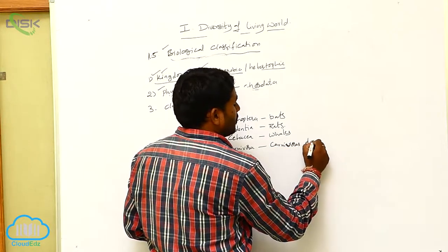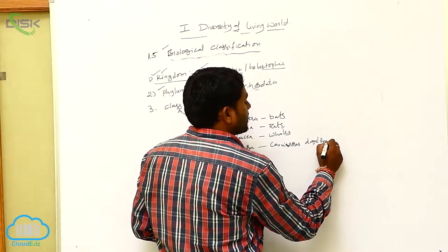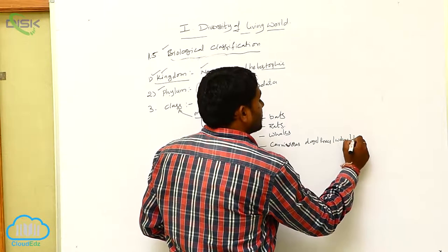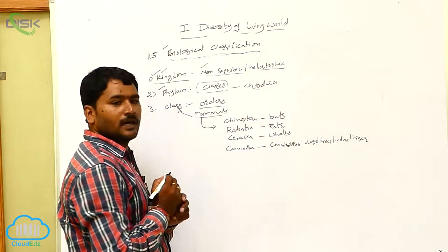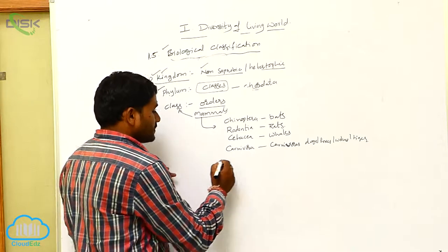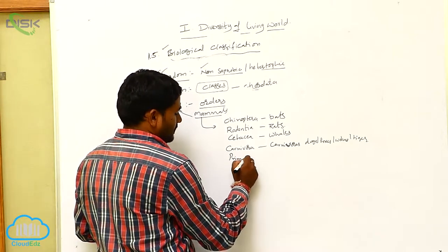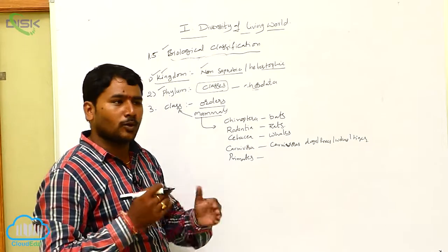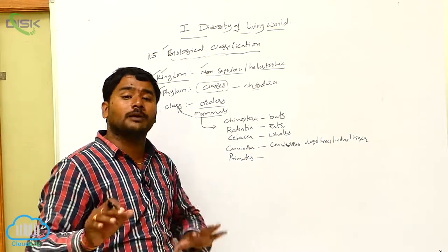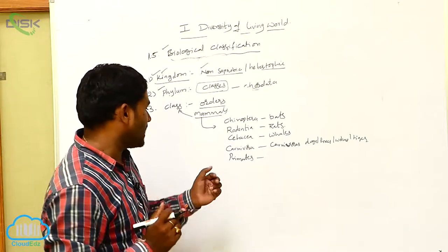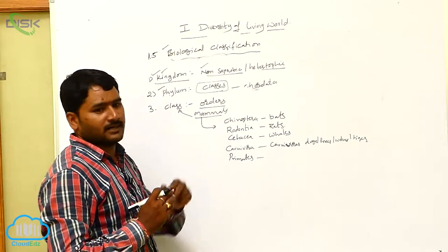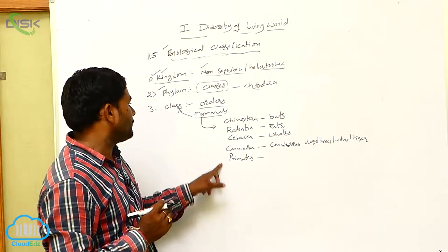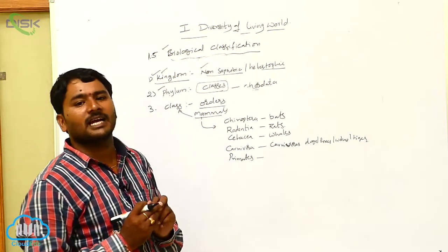Carnivora includes dogs, foxes, wolves, tiger, lion, and all those animals. Next one is Primates. In Primates, monkey, gorilla, ape, chimpanzee, and human beings are included. Human beings belong to the Primates order.